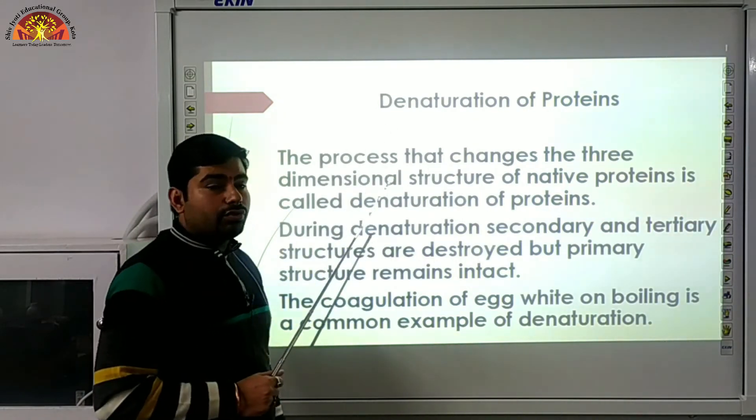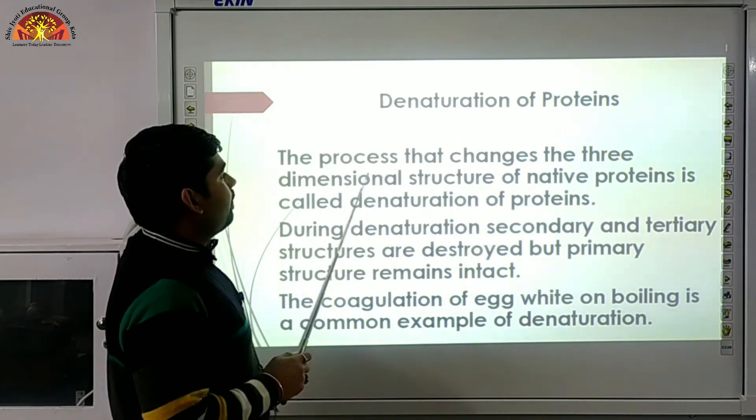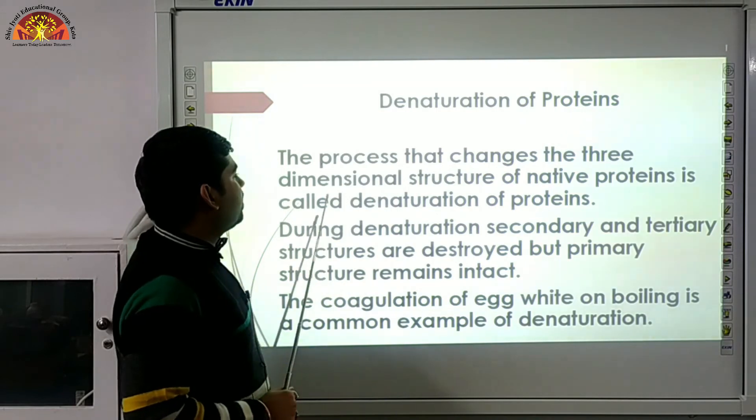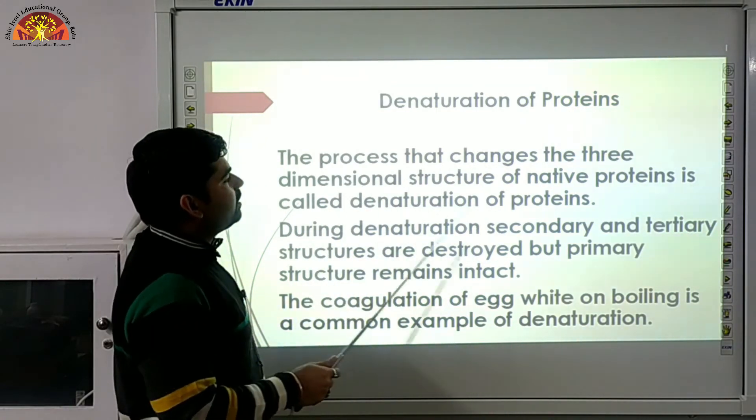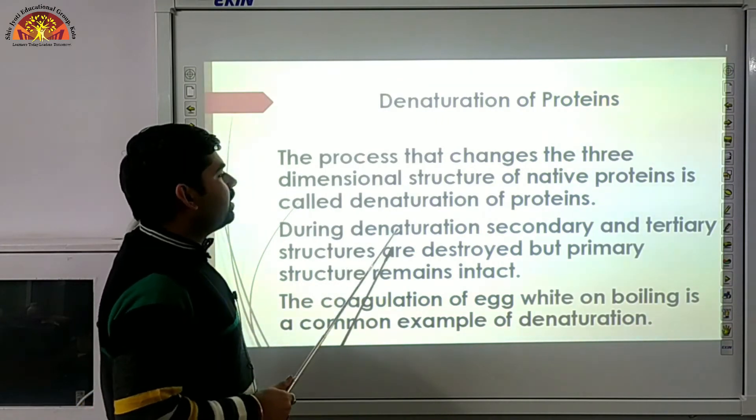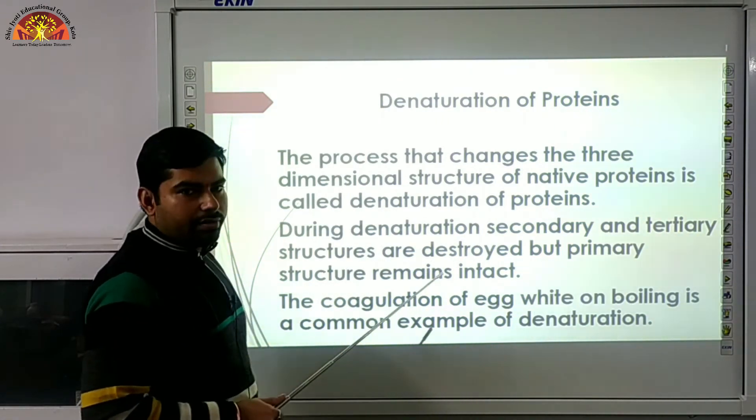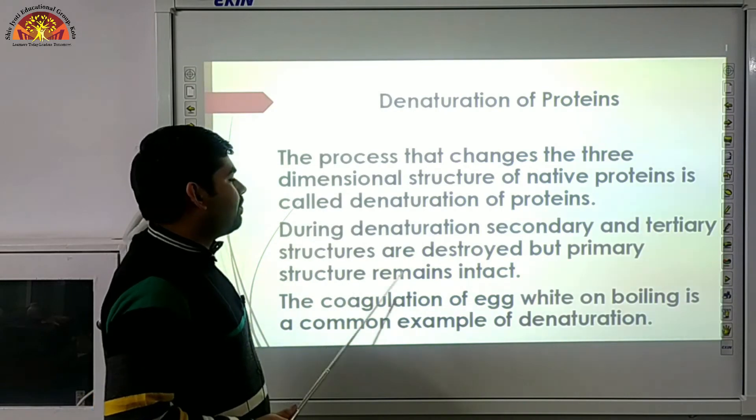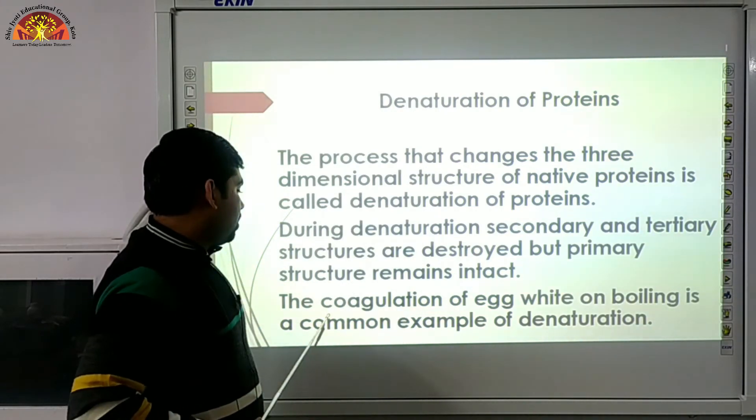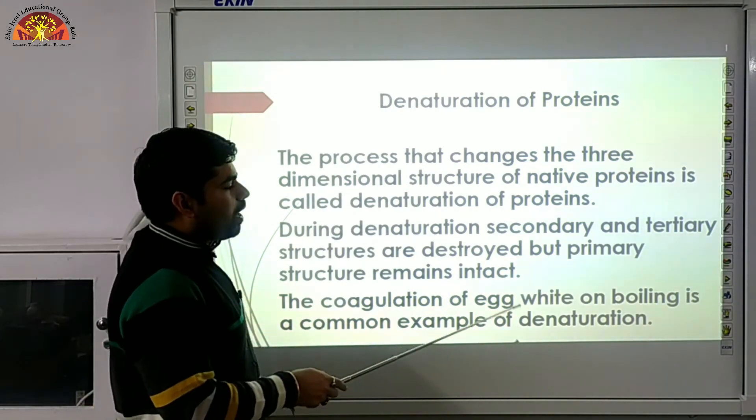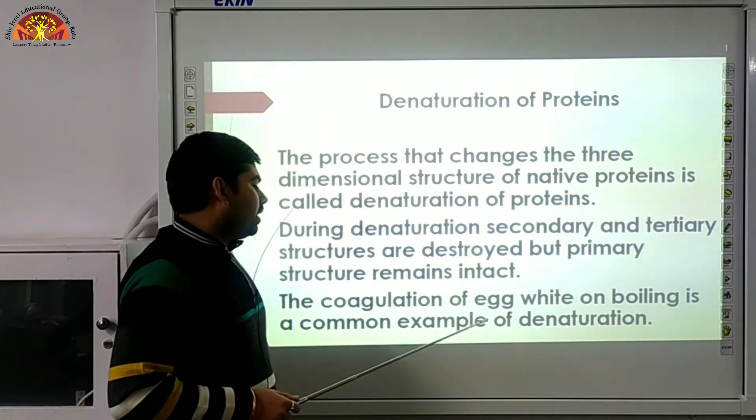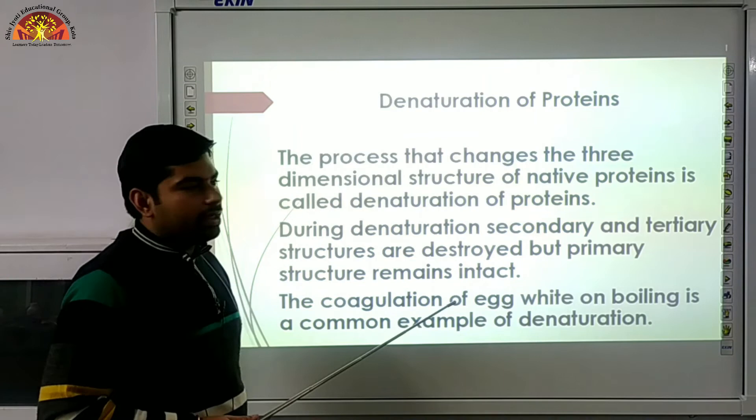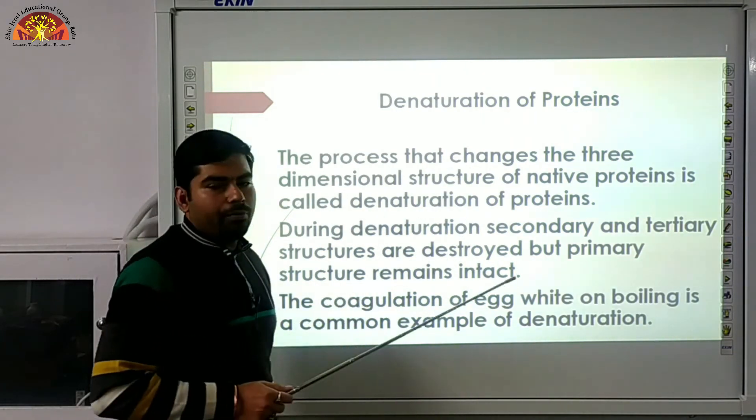Very important - denaturation of protein. The process that changes the three-dimensional structure of native protein is called denaturation of protein. During denaturation, secondary and tertiary structures are destroyed but primary structure remains intact. The coagulation of egg white on boiling is a common example of denaturation.